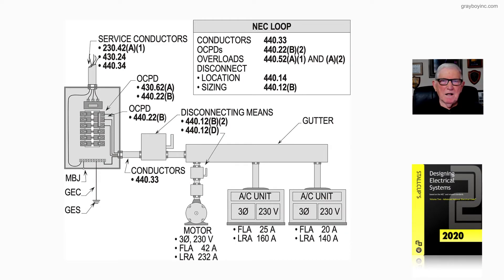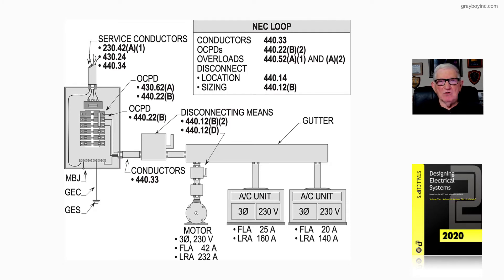Now, this figure 19-6 deals with sizing a disconnecting means, as you see in the illustration, to disconnect one motor and two air-conditioner units. However, it could be two motors, two air-conditioners with other loads, any combination. We did provide you in the illustration the NEC loop, if you wanted to use these sections to size these elements to make up the circuitry of an air-conditioner unit, you could do so. It's a little case study that would be interesting if you wanted to do that.